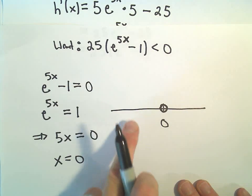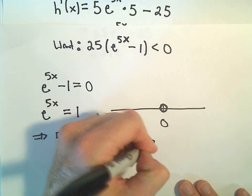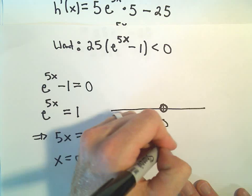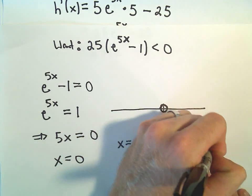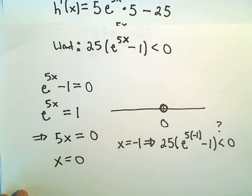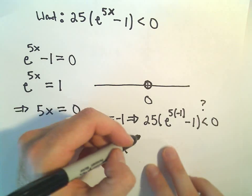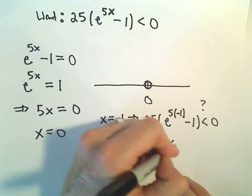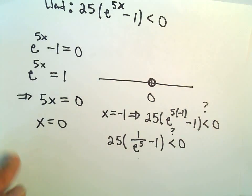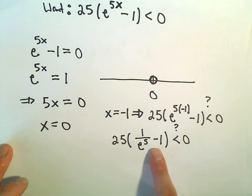If we let, for example, we could take any number to the left. Maybe we use x equals negative 1. And I'm asking myself, if we plug that in, we'd have 25 times e to the 5 times negative 1 minus 1. Is that less than 0 is what I want to know. This is 25, e to the negative 5, that's 1 over e to the 5th minus 1. Is that less than 0?